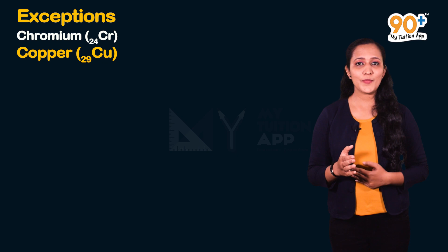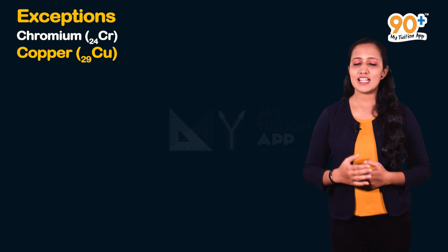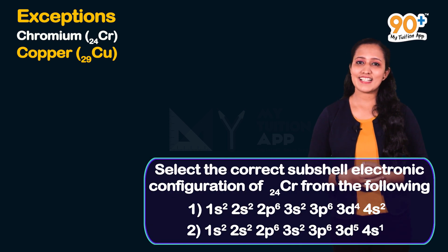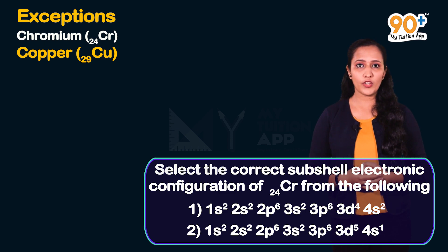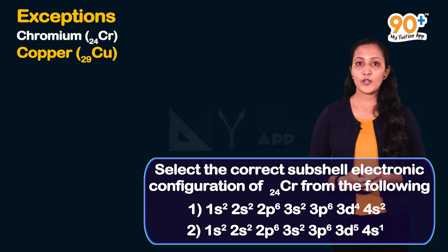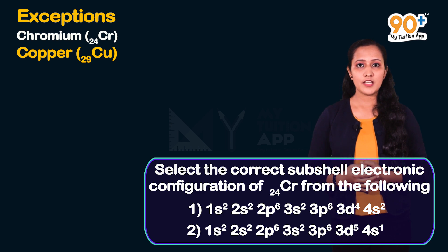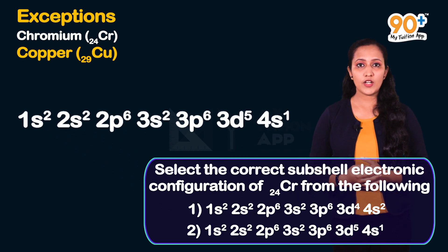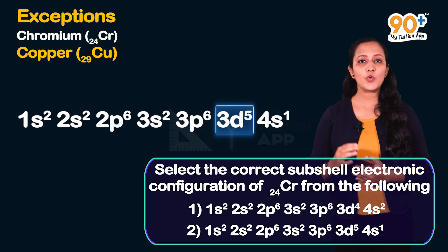Previous year question: Select the correct subshell electronic configuration of chromium (24) from the following. The answer is option 2, because d⁵ is a half-filled configuration, which gives greater stability.